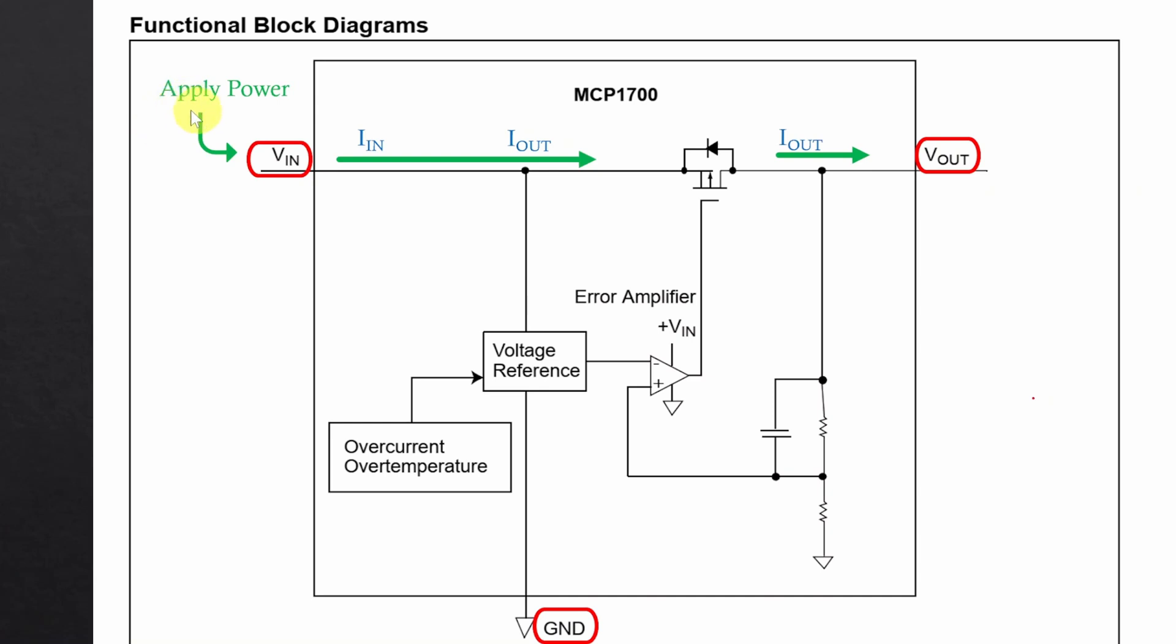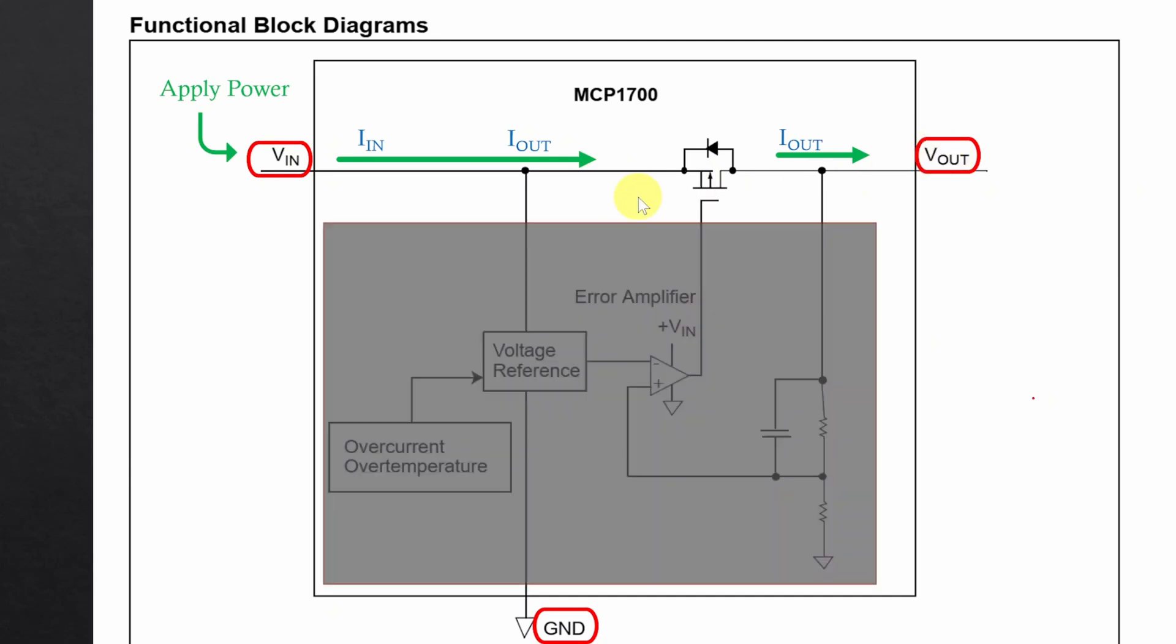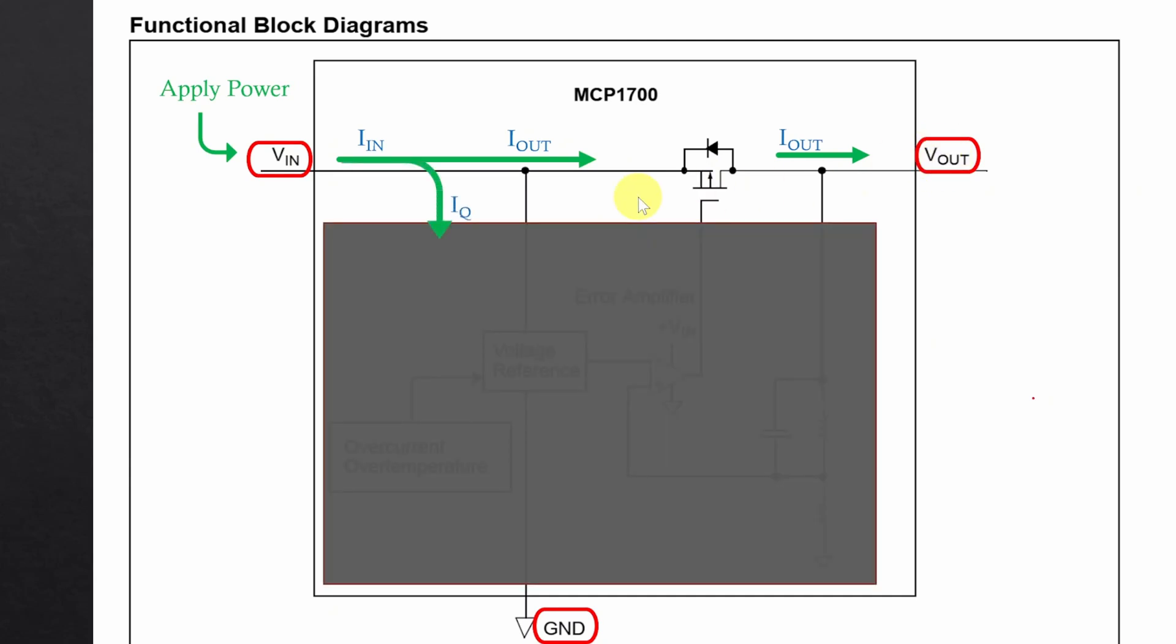When we apply power to the VIN pin most of the current passes through the transistor to the VOUT pin. But a very small amount of current is drawn by the regulator to run its internal circuitry. This current is called quiescent current. So the input current is equal to output current plus quiescent current. But since the quiescent current is very small, we can ignore it and say that the input current is equal to output current.